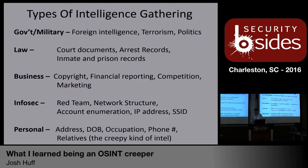Some things that other groups would be interested in for open source intelligence gathering: government and military — obviously there's foreign intelligence, terrorism, and politics. Law enforcement will have court documents, arrest records, inmate and prison records. Businesses are interested in copyright information, financial reporting, competition, and marketing. In security, the red team is going to be looking for network structures, account enumeration, IP addresses, SSIDs. Then you get into the personal stuff — addresses, date of birth, who you work for, who your family is. That's the creepy stuff, and that's what I'm going to cover mostly today.